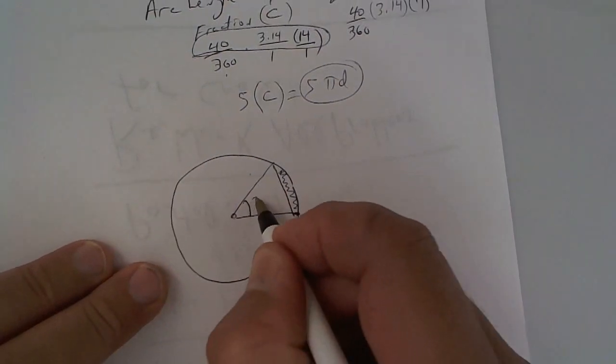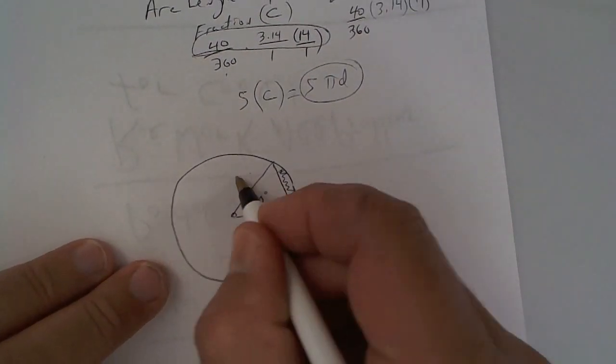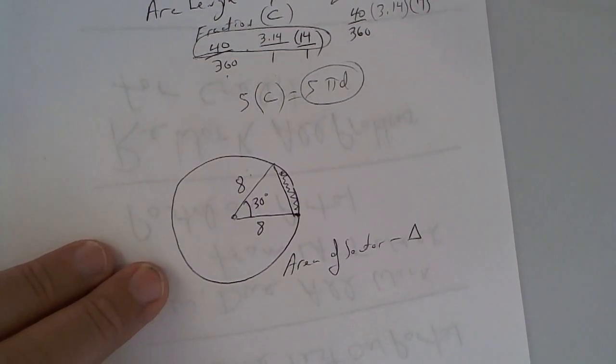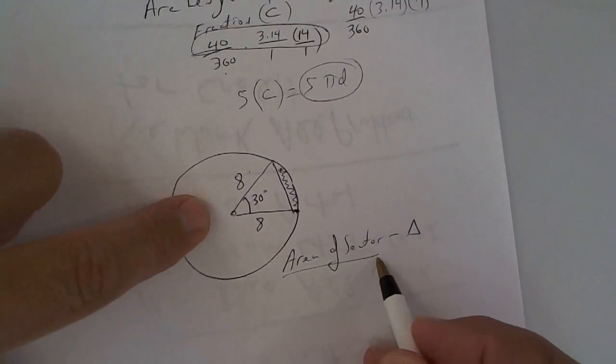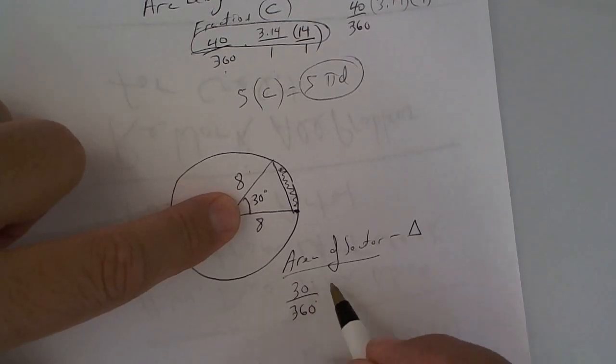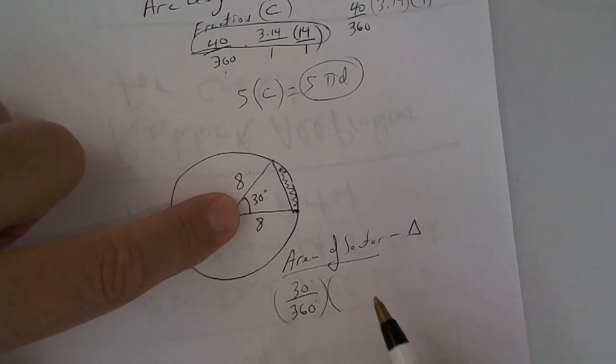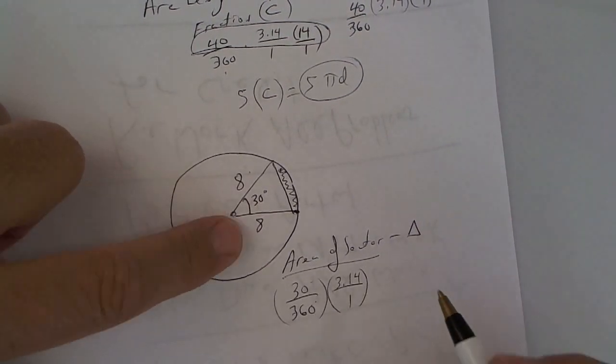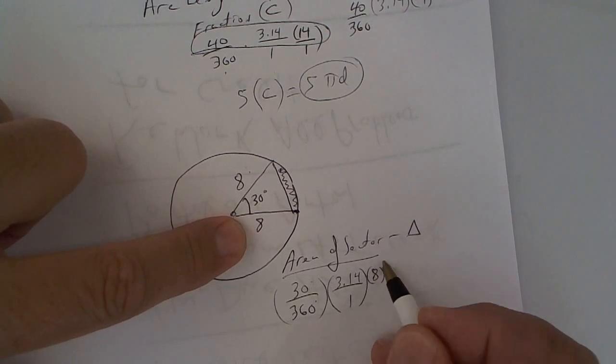Let's make this 30 degrees. Make this radius 8. And we're going to do the area of the sector. So it's going to be the fraction times pi radius squared, 8 times 8.